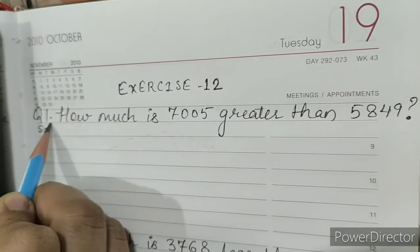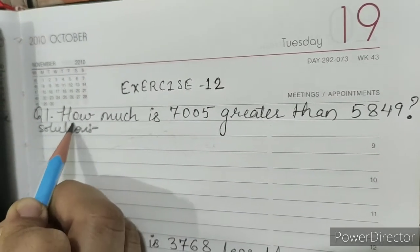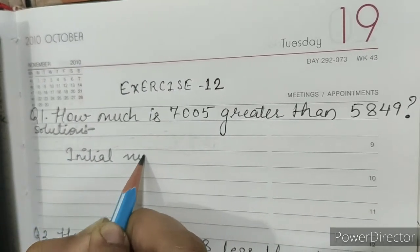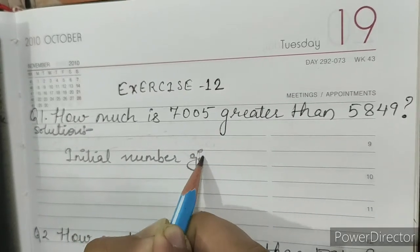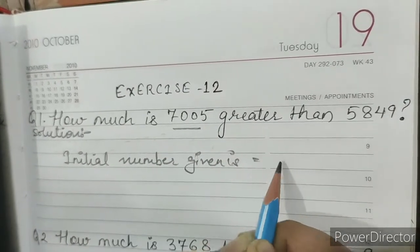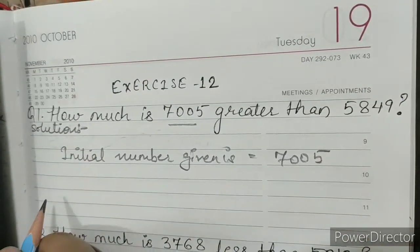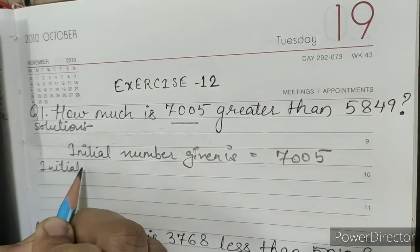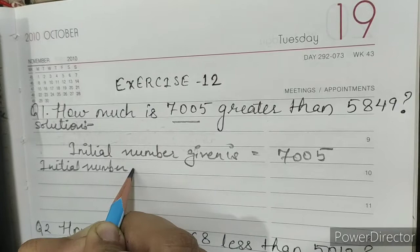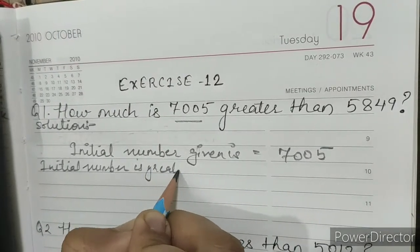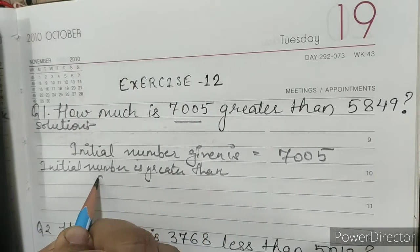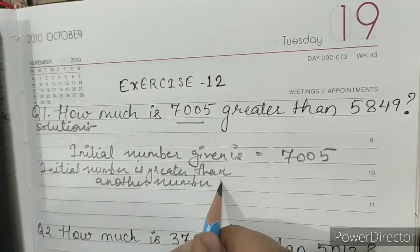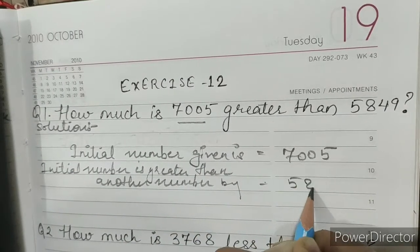Solution. Initial number given is 7005. Initial number is greater than another number by 5849.